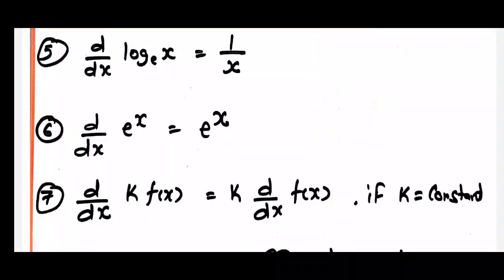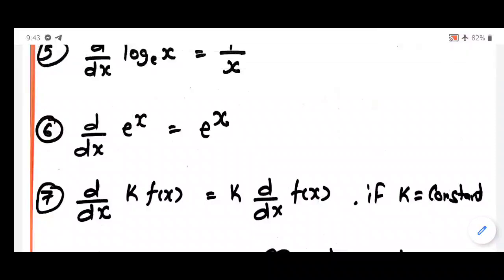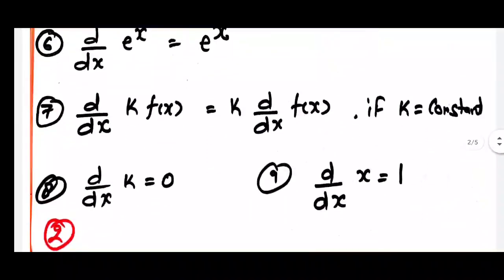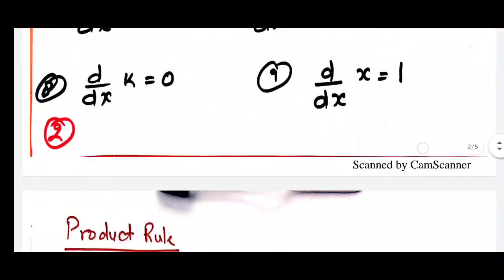The seventh formula: if a function is multiplied by a constant and then differentiated, the constant can be taken out. So d/dx of k times f(x), where k is a constant, equals k times d/dx of f(x). The next formula: d/dx of a constant is zero — differentiation of a constant is always zero. Also, d/dx of x equals 1, and similarly dy/dy equals 1. Make a note of these formulas and try to learn them.